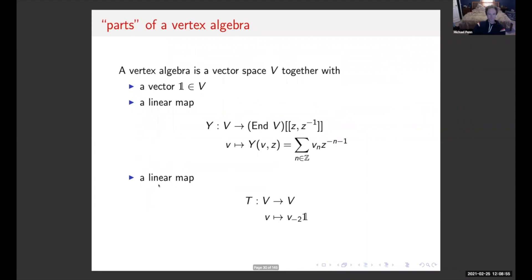Now let's look at the definition of a vertex algebra. A vertex algebra is a vector space V together with a special vector called the vacuum (denoted by bold 1), and a linear map called the vertex operator going from V to the space of formal Laurent series with coefficients in the endomorphisms of V. Here Vₙ is an endomorphism of V, but we think of Vₙ acting on another vector as the nth product between V and that other vector.